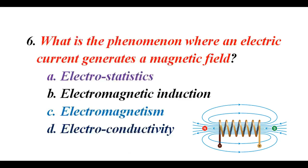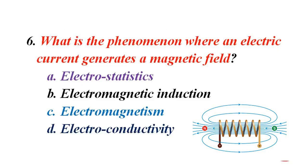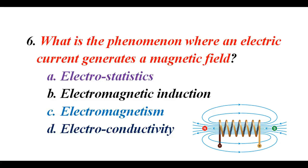What is the phenomenon where an electric current generates a magnetic field? A. Electrostatics. B. Electromagnetic conduction. C. Electromagnetism. D. Electroconductivity. The correct answer is C. Electromagnetism.